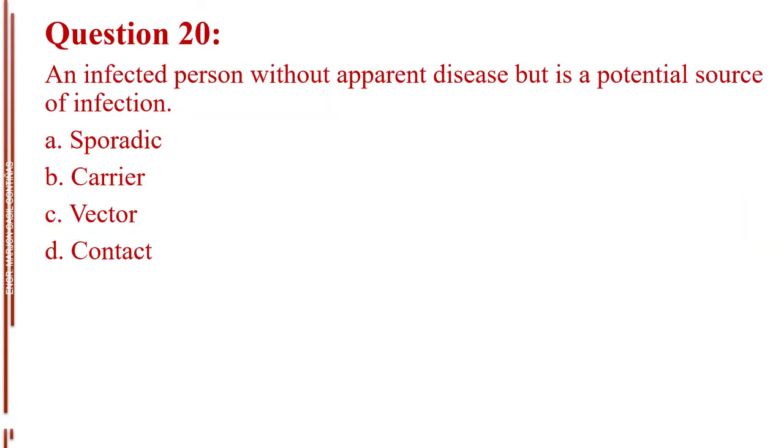Question number 20. An infected person without apparent disease, but is a potential source of infection. A. Sporadic. B. Carrier. C. Vector. D. Contact. The answer is Letter B, carrier.